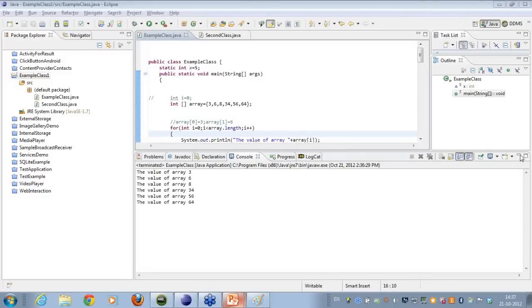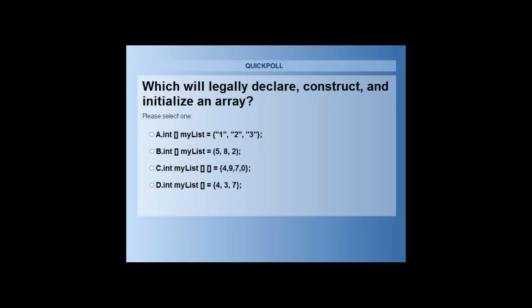So I have a question for all of you here: which will legally declare, construct, and initialize an array? As you can see, you have got four options wherein I have an array my list with quotes 1, quotes 2, quotes 3, then I have int array my list which has values 5, 8, 2.